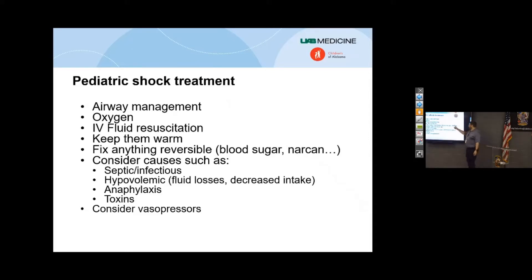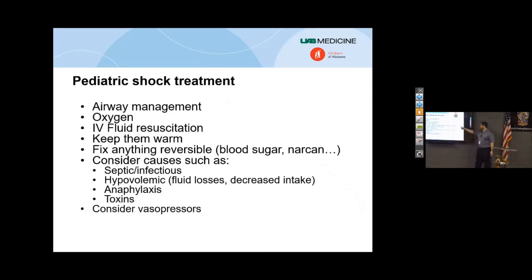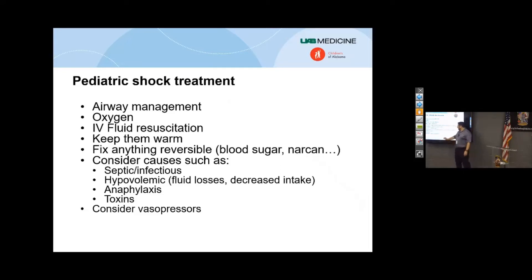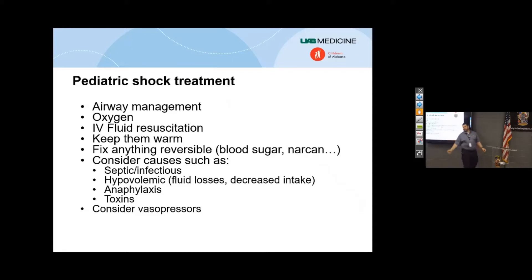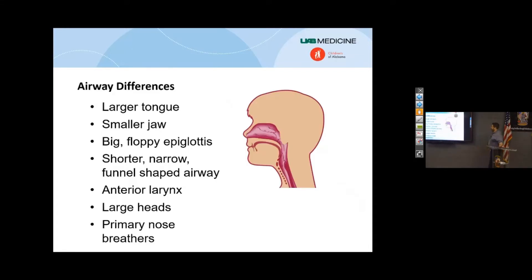Fix reversible things — think about mental status, disability, blood sugar. Blood sugar is a big one. Narcan is unfortunately more and more necessary. Consider causes. And lastly, if after all this we're still in a bad shock state, we've got to think about vasopressors to support their circulatory status.